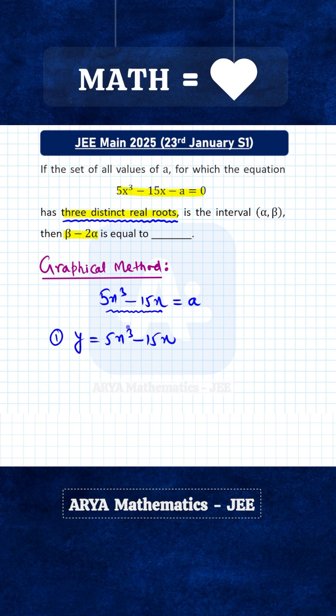First step is we have to find the behavior of this function at infinity. That means when x is either plus infinity or minus infinity, we have to figure out what should be the value of y. At infinity, this term 5x³ will dominate. So if x is plus infinity, then you can easily see that y will be infinity, and when x is minus infinity, then y will be minus infinity.